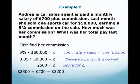To find the total amount Andrea made for the whole month, you take the $2,500 commission and add the $700 monthly salary, and she receives $3,200. So Andrea made $3,200 for last month's work.